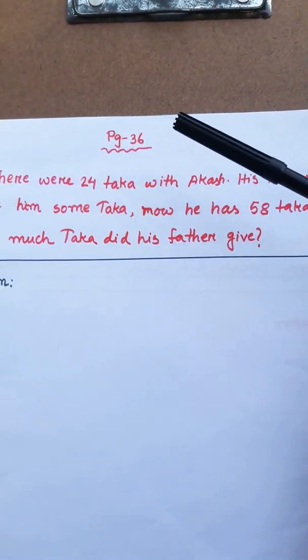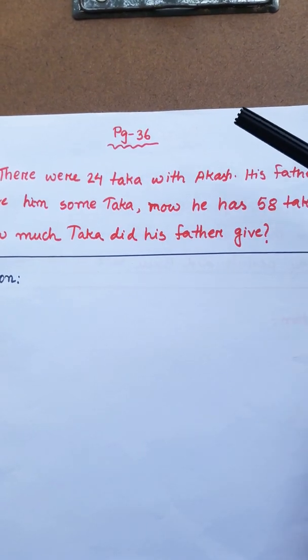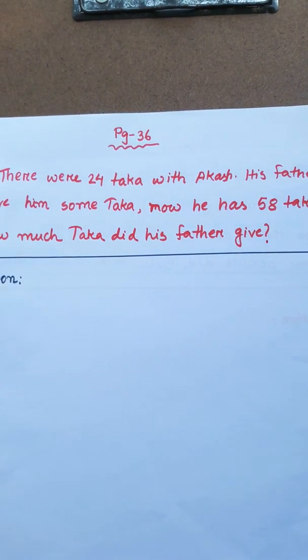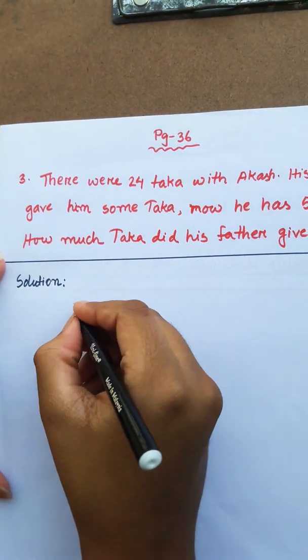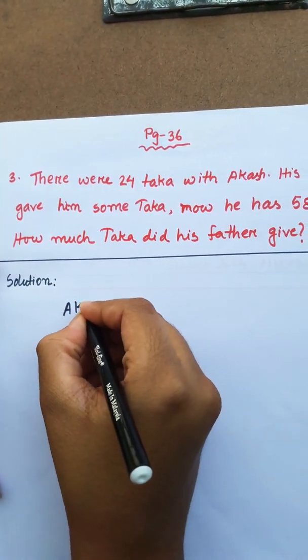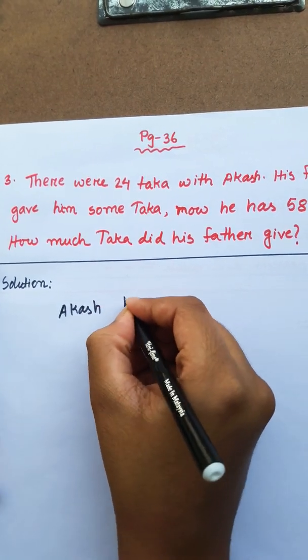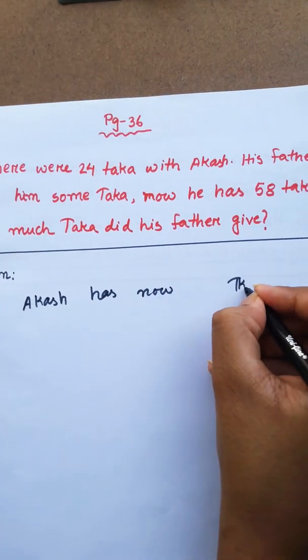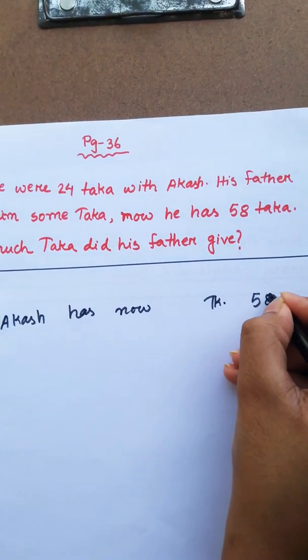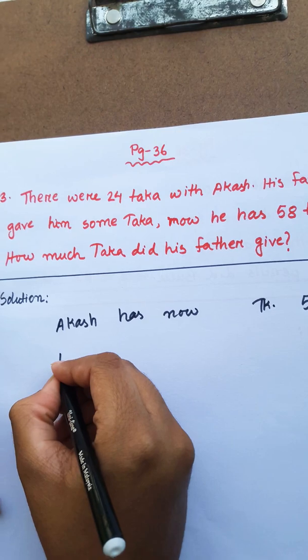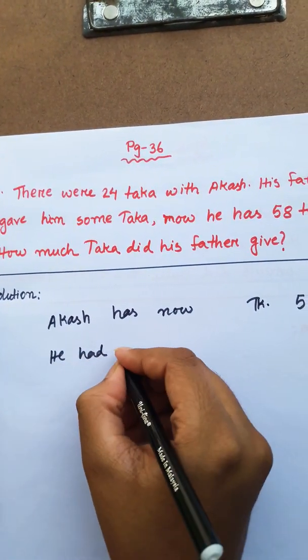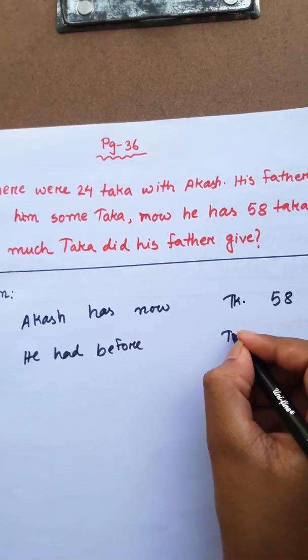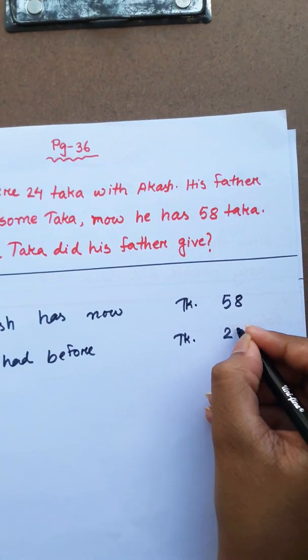Akash had 24 taka. His father gave him some, now he has 58 taka. How much taka did his father give? Let me read. Akash has now 58 taka. He had before 24 taka.